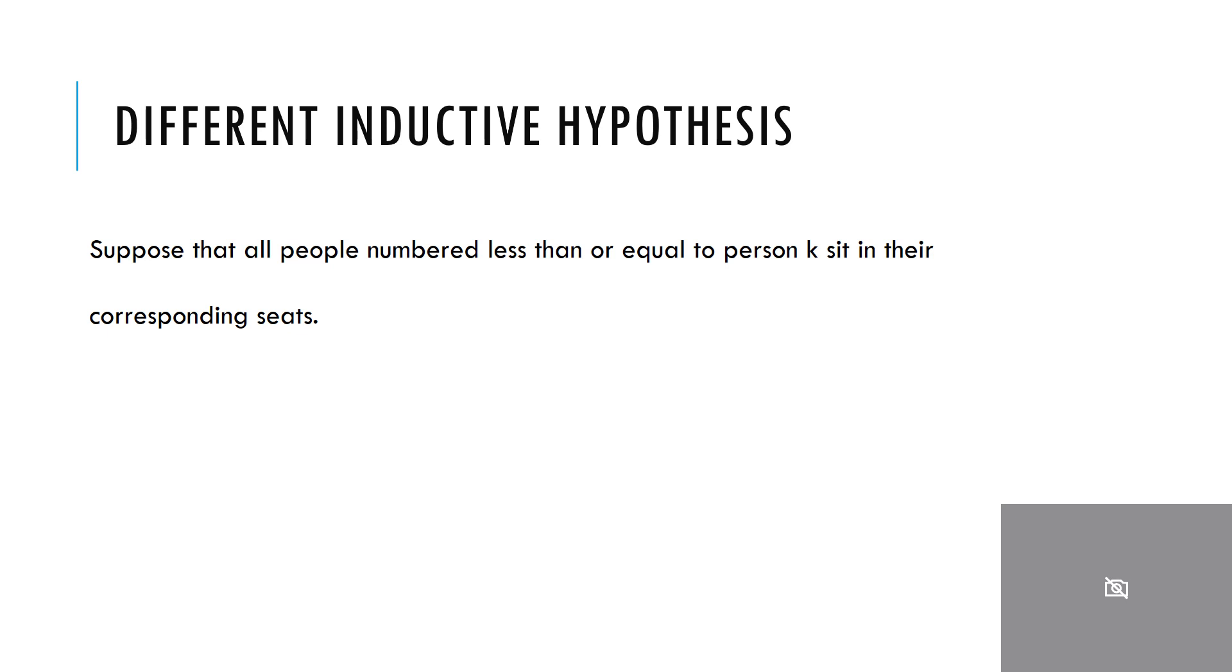So I'm going to propose a different inductive hypothesis. I'm going to suppose that all people numbered less than or equal to person k sit in their corresponding seats.